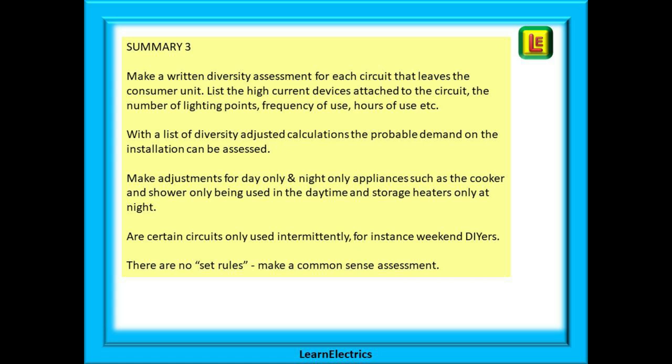Make a written diversity assessment for every circuit that leaves the consumer unit. List the high current devices attached to the circuit, the number of lighting points, frequency of use, hours of use, etc. With a list of diversity adjusted calculations, the probable demand on the installation can be assessed. Make adjustments for day only and night only appliances, such as the cooker and the shower only being used in the daytime and storage heaters only in use at night. Are certain circuits only used intermittently, for instance, weekend DIYers? There are no set rules; just make a common sense assessment.